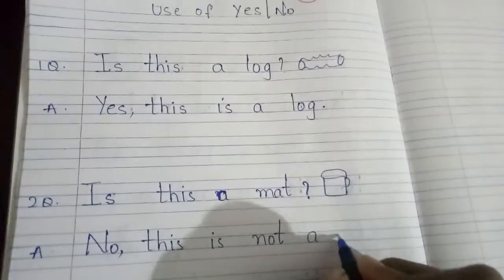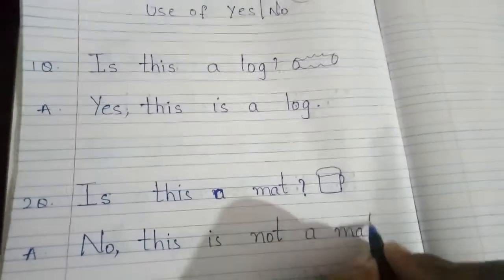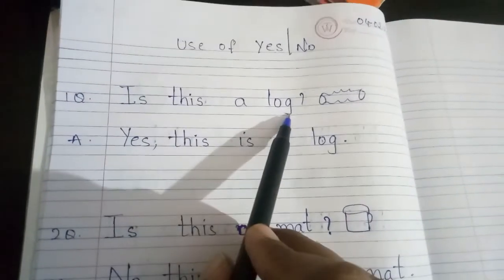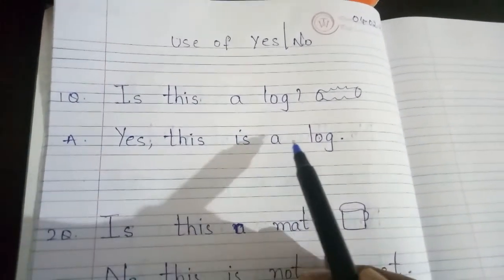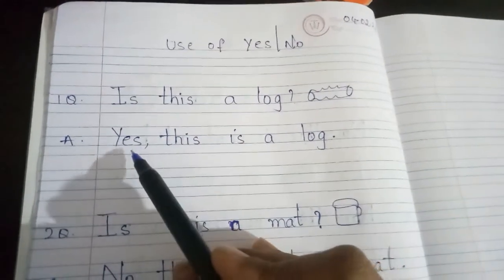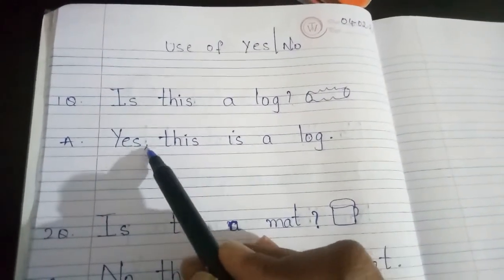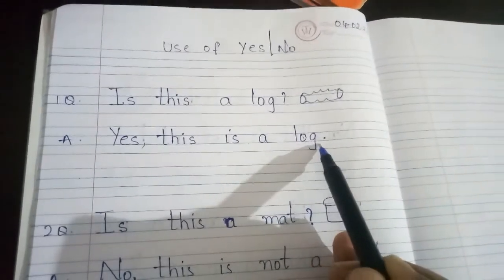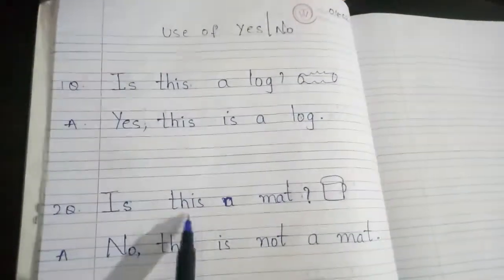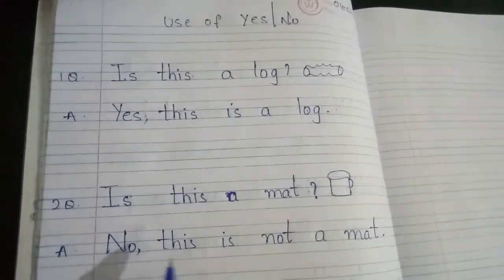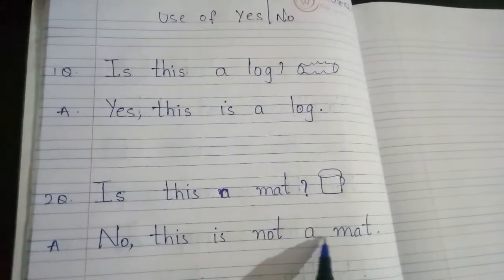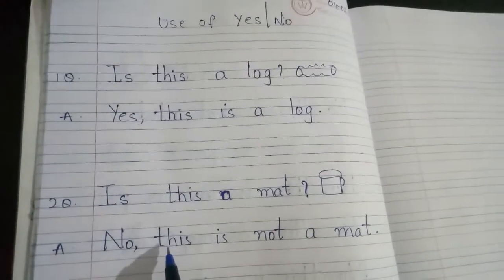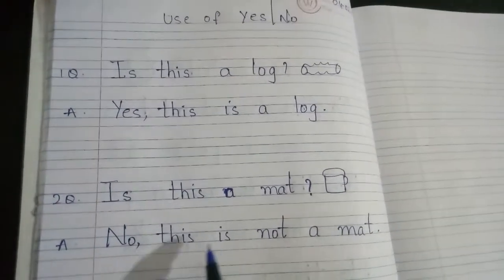So we have: 'Is this a log? Yes, this is a log.' And: 'Is this a mat? No, this is not a mat.' After 'No' you should keep a comma — that is called a comma.